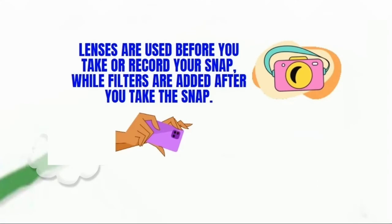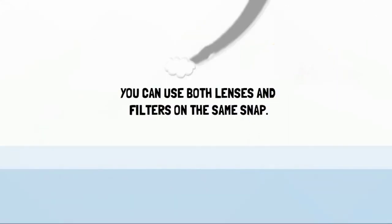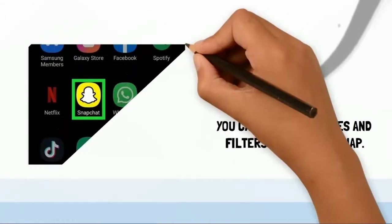Lenses are used before you take or record your snap, while filters are added after you take the snap. You can use both lenses and filters on the same snap.